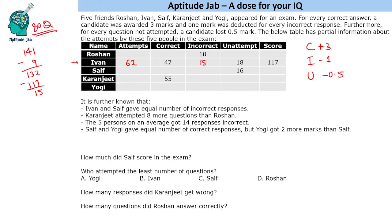His total attempts are correct plus incorrect, that is 62 attempts, and this also tells us that the number of questions in the paper is 80. There are 80 questions in this paper, and this will help us fill data for the remaining students. Ivan and Saif gave an equal number of incorrect responses, so we know Saif also gave 15 incorrect responses.